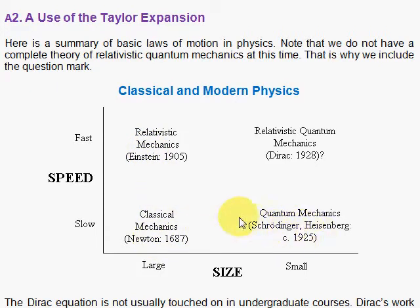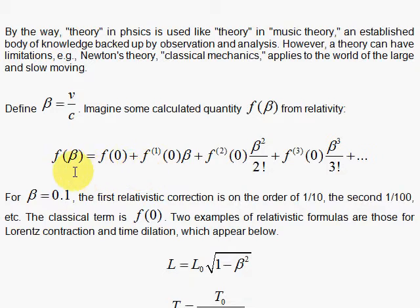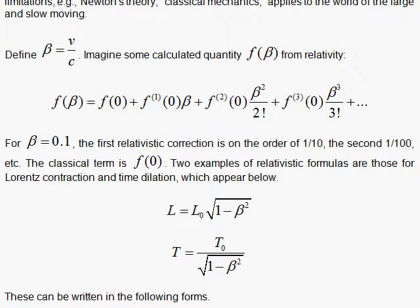In the quantum realm it's more complicated — what you have to deal with is the action. The action is very small when bodies are small, but as bodies get larger and larger the action gets large and you recover classical mechanics. In relativity, you can nicely express the Lorentz contraction and time dilation in terms of beta, which is the speed of the moving body relative to the speed of light — so beta of 0.1 is one-tenth the speed of light.